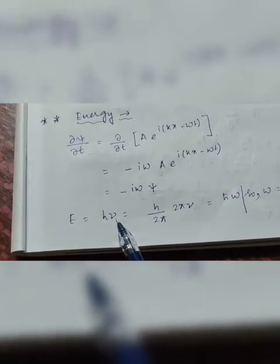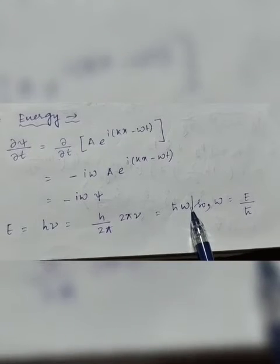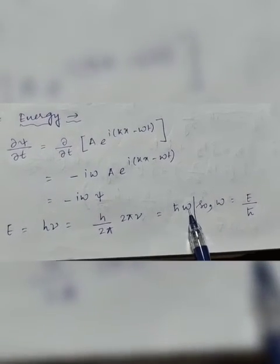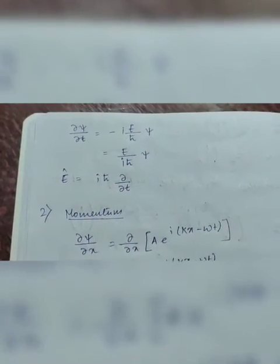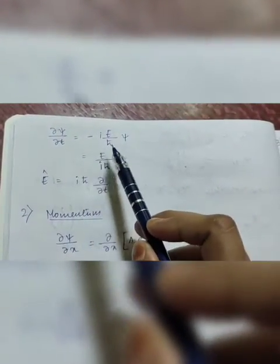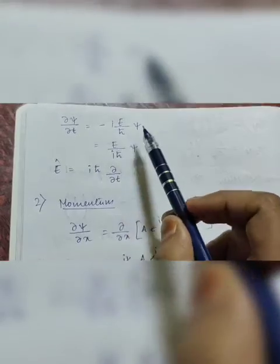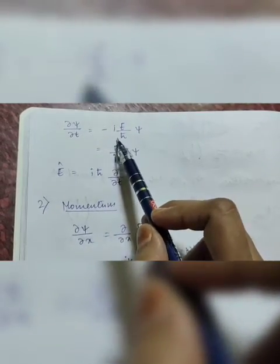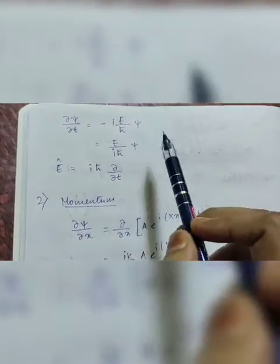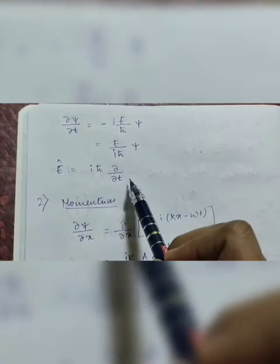We know energy E = hν. Dividing and multiplying by 2π gives E = (h/2π)(2πν) = ħω, so ω = E/ħ. Substituting into ∂ψ/∂t = −iω ψ gives ∂ψ/∂t = −(iE/ħ)ψ. Multiplying numerator and denominator by i, and using i² = −1, we get E ψ = iħ ∂ψ/∂t. Therefore, the energy operator equals iħ ∂/∂t.